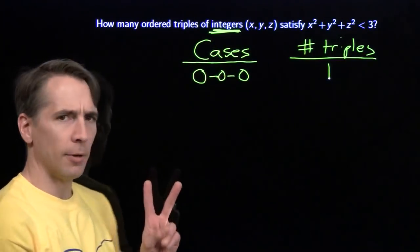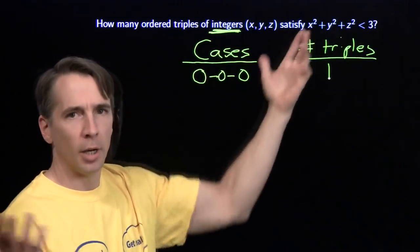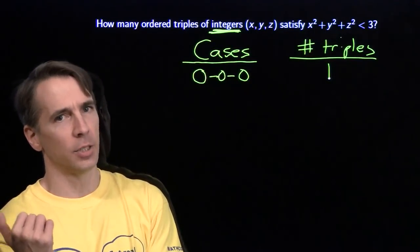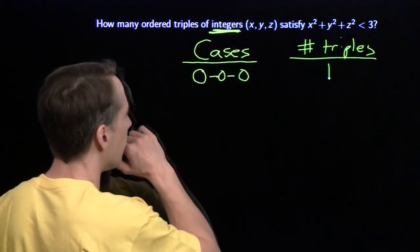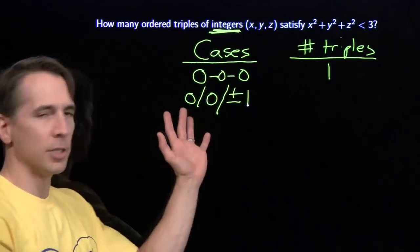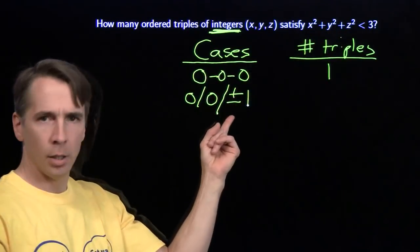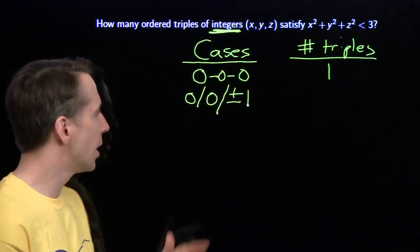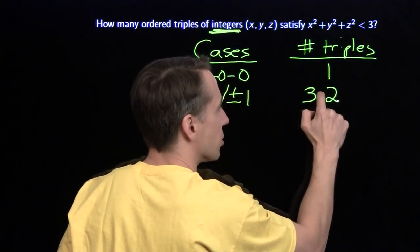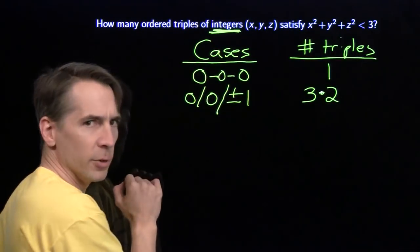The next thing we can do is have two of them as zero — then what can the other one be? The other one can't be two or higher because squaring two gives four, which is already too large. So it can be one or negative one. So we can have zero, zero, and plus or minus one. Now, there are three ways I can choose which of x, y, or z is non-zero, and then two ways I can choose that number to be one or negative one. That gives us three times two equals six such triples.